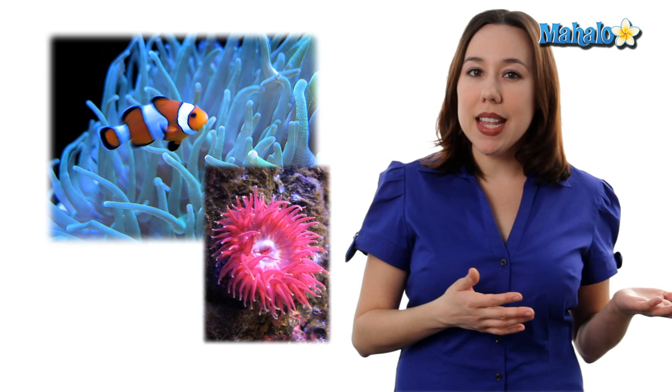Let's move on to commensalism. Commensalism is a positive for species A and a zero for species B. That means no benefit but no harm either.